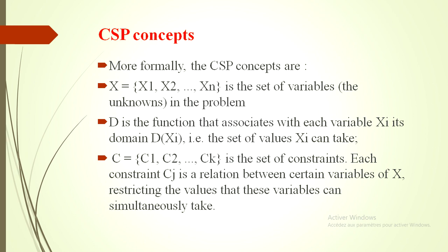More formally, the CSP concepts are three sets. We have X, the set of variables or the unknowns in the problem. We can see also the decision variables. D is the function that associates with each variable Xi its domain D(Xi), it means the set of values Xi can take. And we have C, the set equal to C1, C2 to Ck, is the set of constraints. Each constraint Cj is a relation between certain variables of X, restricting the values that these variables can simultaneously take.